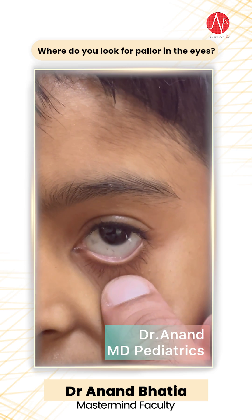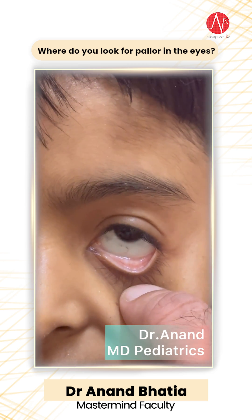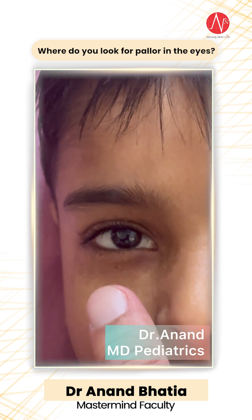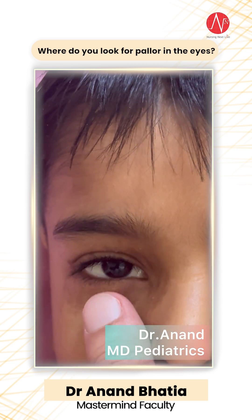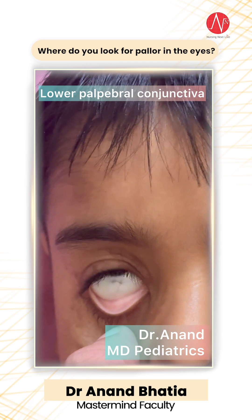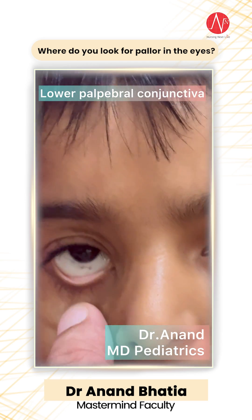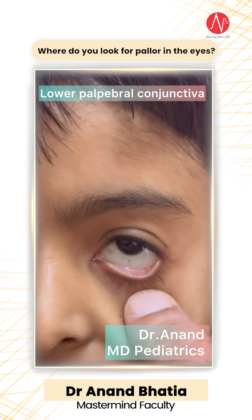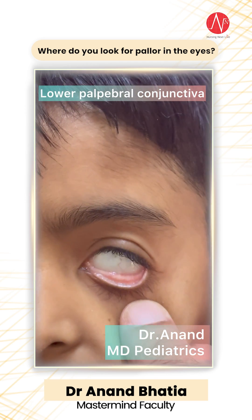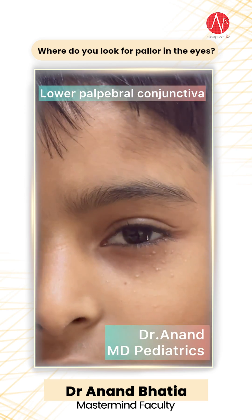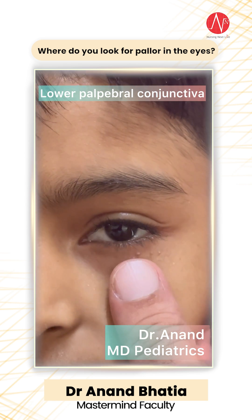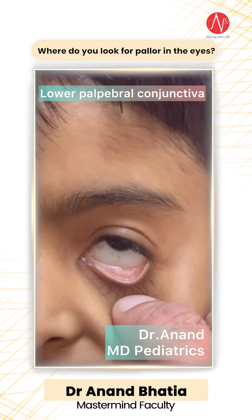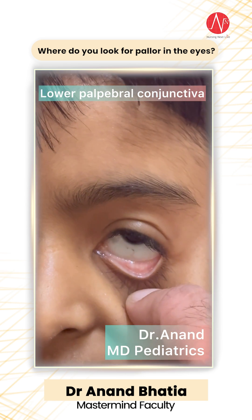When the examiner asks 'show me how you look for pallor,' you check the lower palpebral conjunctiva. This must be done in both eyes together. You can also look at the dorsum of the tongue.